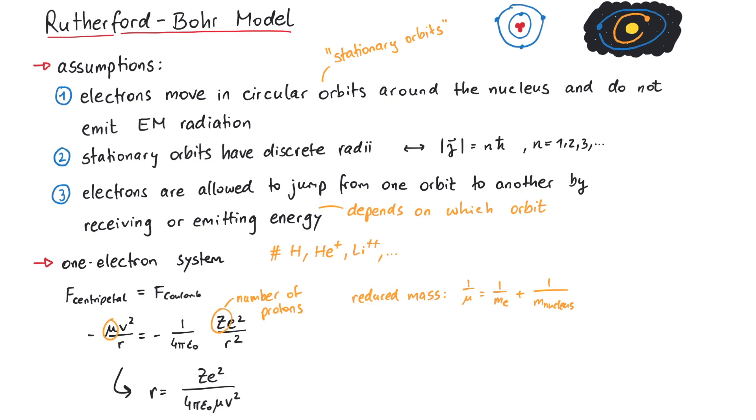At this point, we must make sure that there are only discrete orbits, as mentioned in the second assumption. By claiming that the angular momentum must be an integer multiple of h-bar, we can express the velocity of the electron in terms of this integer n.